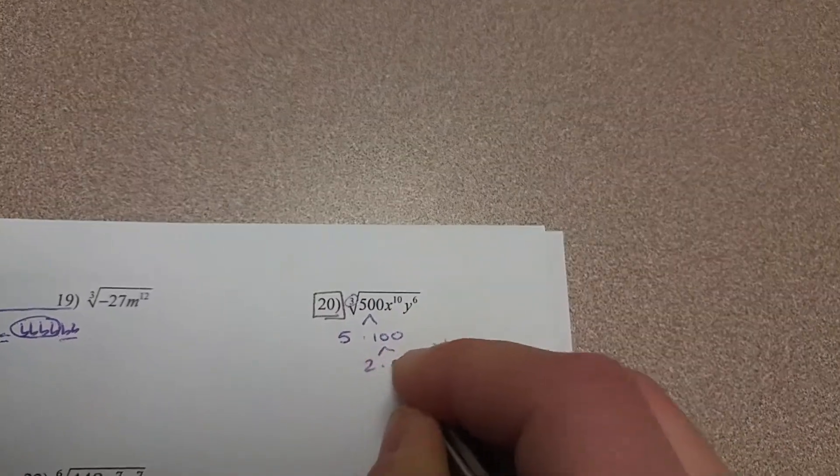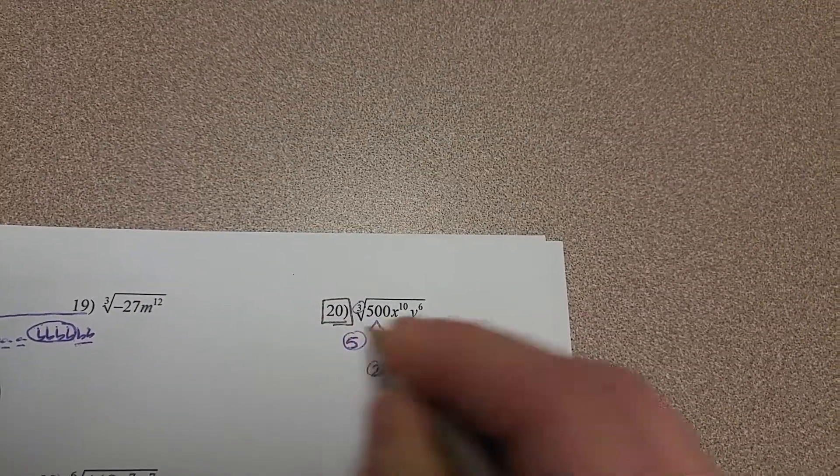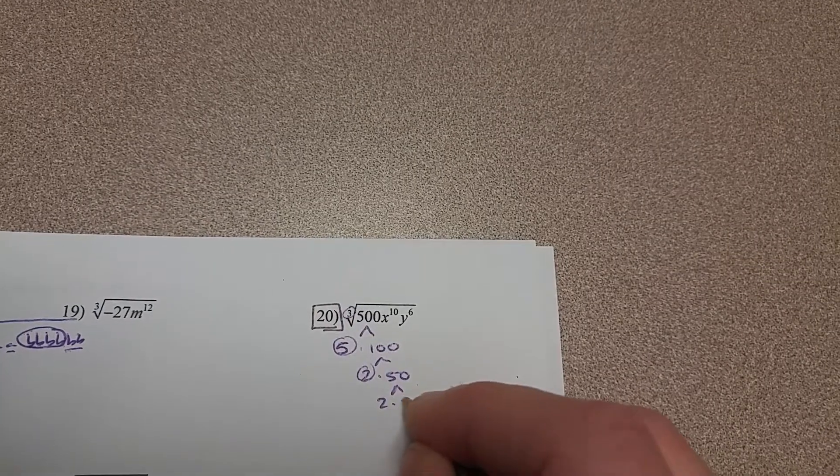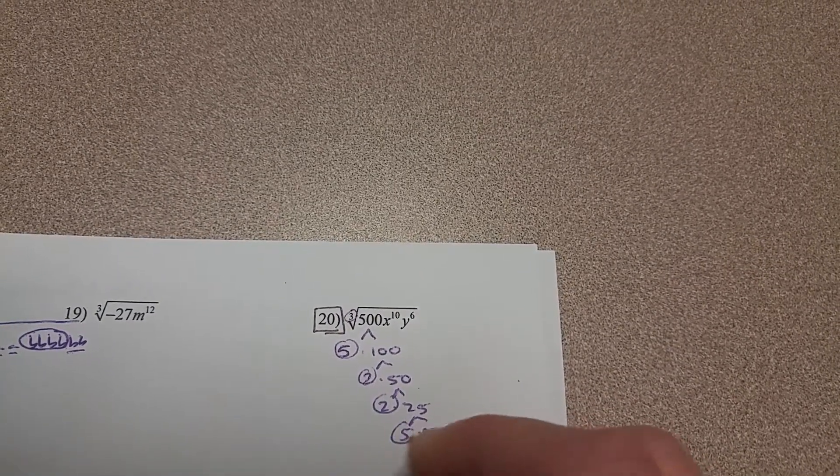5 and 100, 2 and 50, we'll circle the primes as we go, 2 and 25, 5 and 5.